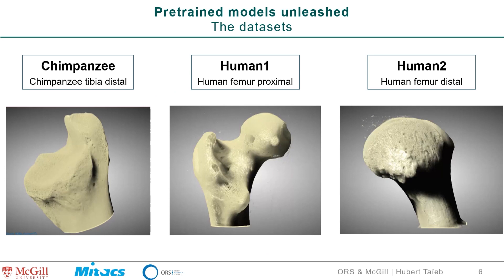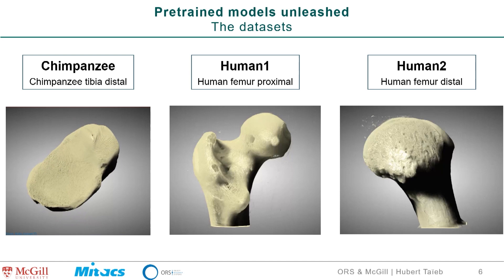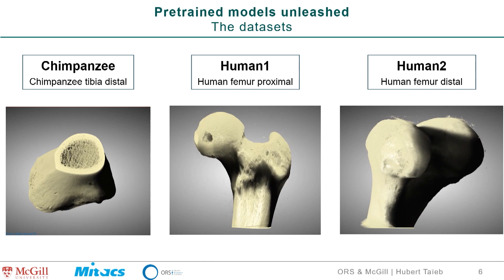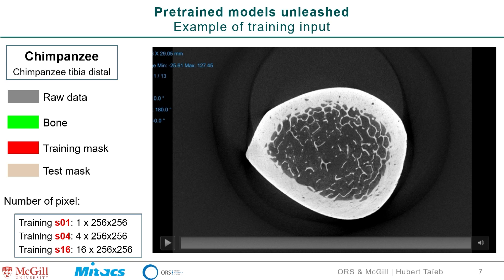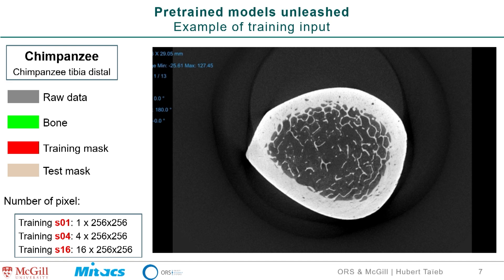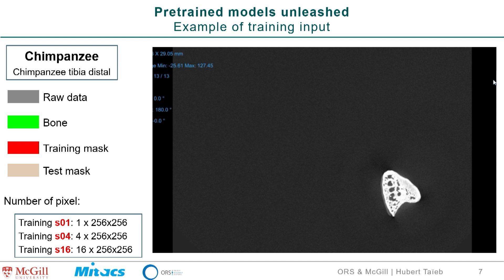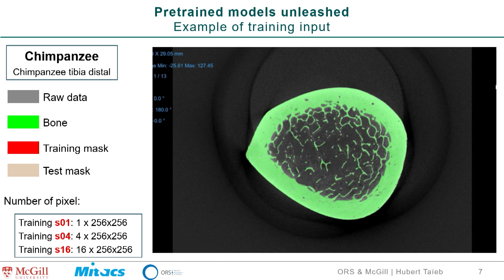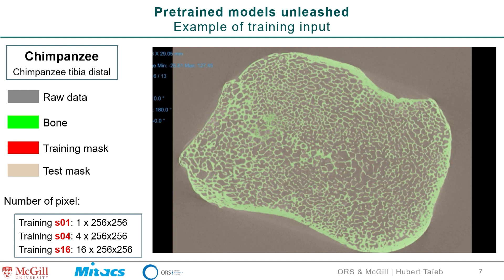The dataset I'll be using is three datasets: a chimpanzee tibia and two human bone samples — femur proximal and femur distal. I'll show these three datasets and how they perform individually. For training, I took just a few slices — like 10 slices — of the bone example, with the bone segmentation given to me. From that, I took patches — a training mask in red — and did training with either one tile, four tiles, or 16 tiles. Then I used an empty slice to test whether the model performed properly on a full test slice.